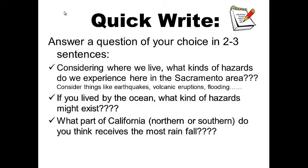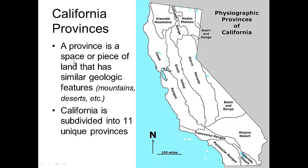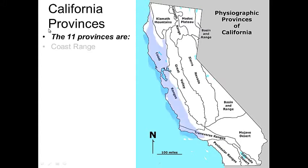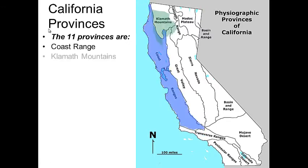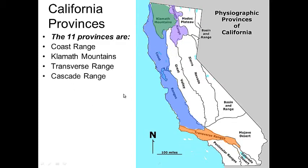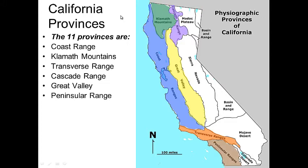So, California provinces — what is a California province? A province is a space or piece of land in California that has similar geologic features. Is it flat like the valley? Does it have mountains like the Sierra Nevada? Is it desert? California is subdivided into 11 unique provinces: the Coastal Range, the Klamath Mountains, the Transverse Range, the Cascade Range where volcanoes like Shasta are, and the Great Valley, which is pretty much where we live.